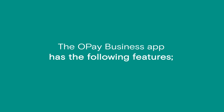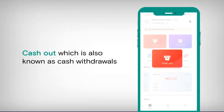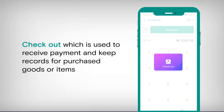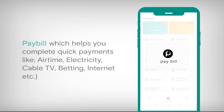The Opay business app has the following features. Cash Out, which is also known as cash withdrawals. Checkout, which is used to receive payments and keep records for purchased goods or items. Pay Bill, which helps you complete quick payments like airtime, electricity, cable TV, betting, internet, and more.